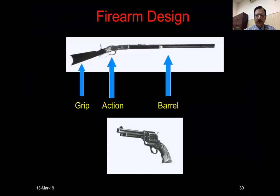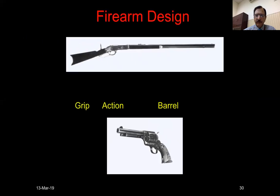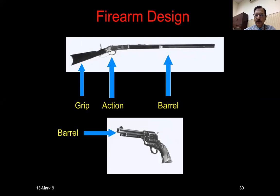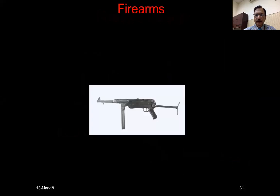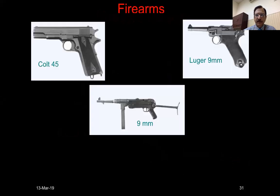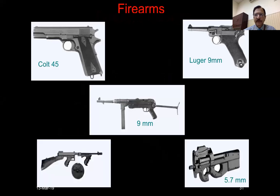Whatever the weapon, the basic function is the same — there is a grip, an action in the middle, and a barrel, in both smooth bore and rifled weapons.